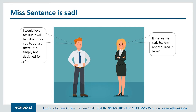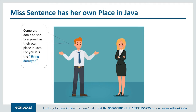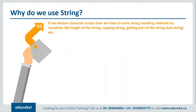Miss Sentence says that's kind of sad and thinks she's not required by Java. But Mr. Letter tells her that is not true — everybody has a place in Java. As a sentence, she too would have a place in Java. The space given by Java to sentences is basically String, and that is what we are going to see in our next topic of discussion.